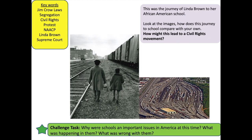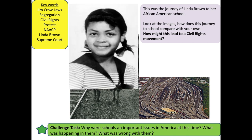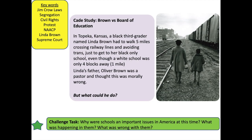Take a look at the two images on the slide — this was the journey of Linda Brown to her African American school. How does this journey compare with your own? How might this journey lead to a civil rights movement? Challenge task: why were schools an important issue in America at this time? In Topeka, Kansas, a black third grader named Linda Brown had to walk five miles, crossing railway lines and avoiding trains, just to get to her black-only school, even though there was a white school just four blocks away — only one mile. Linda's father Oliver Brown was a pastor and thought this was morally wrong.